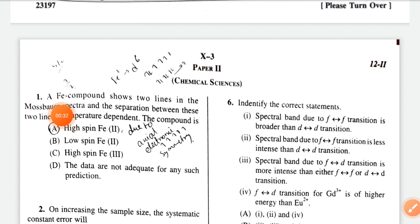First question: an Fe compound shows two lines in the Mössbauer spectra and the separation between these two lines is temperature dependent. The compound is high spin Fe(II), option A. The reason is due to axial electronic symmetry.